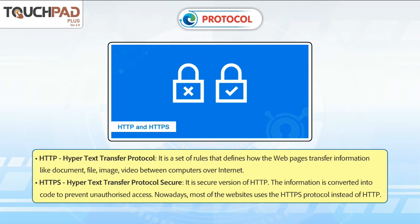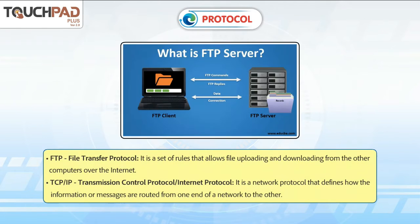HTTPS – Hypertext Transfer Protocol Secure – is a secure version of HTTP. The information is converted into code to prevent unauthorized access. Nowadays, most websites use the HTTPS protocol instead of HTTP. FTP – File Transfer Protocol – is a set of rules that allows file uploading and downloading from other computers over the internet.